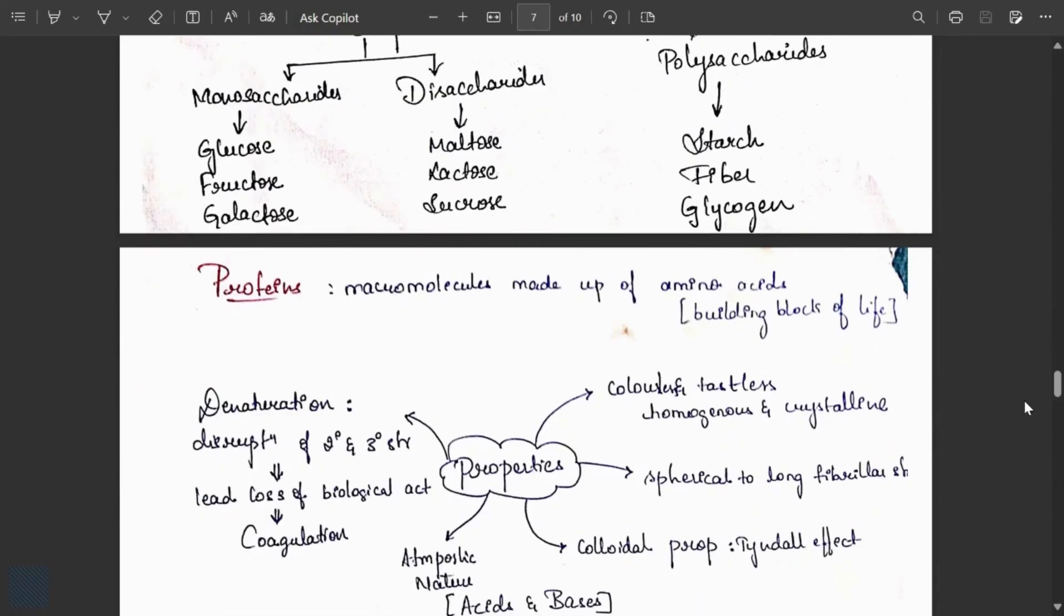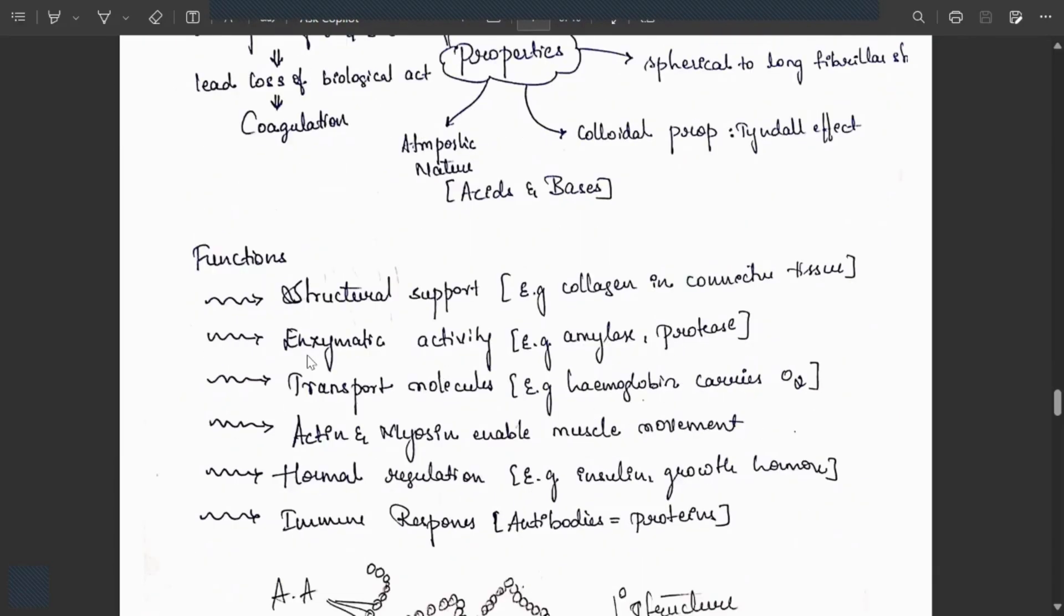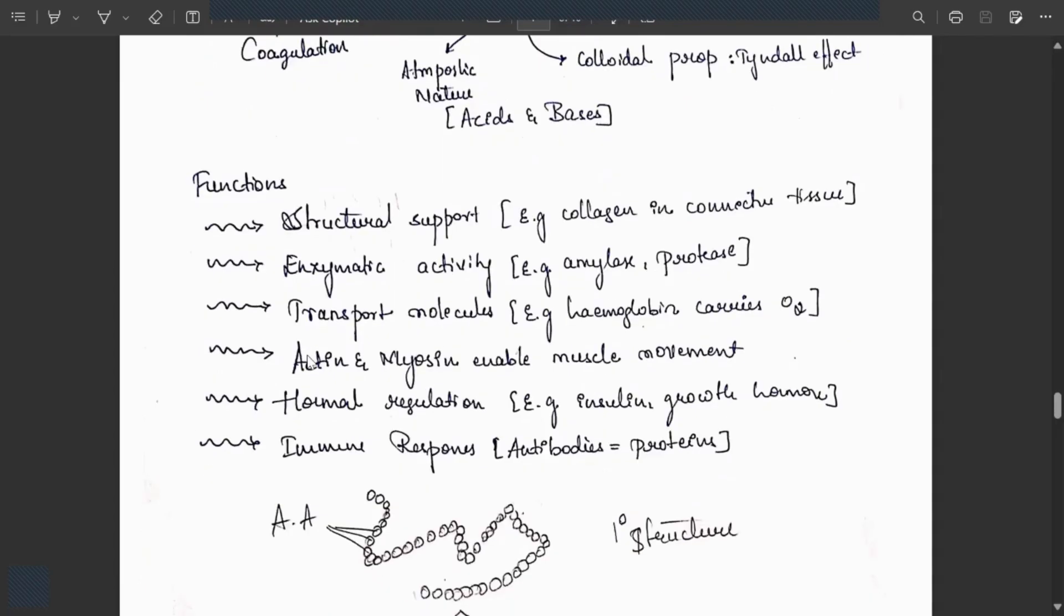Proteins: macromolecules made up of amino acids, building blocks of life. Properties: colorless and tasteless, homogeneous and crystalline, spherical to long fibrous structures. Colloidal property showing Tyndall effect. Amphoteric nature, acidic and basic. Denaturation is disruption of secondary and tertiary structure leading to loss of biological activity, called coagulation. Functions: structural support like collagen in connective tissue, enzymatic action with amylase and protease, transport molecules like hemoglobin carrying oxygen, actin and myosin enable muscle movement, hormonal regulation with insulin and growth hormones, immune response with antibodies.